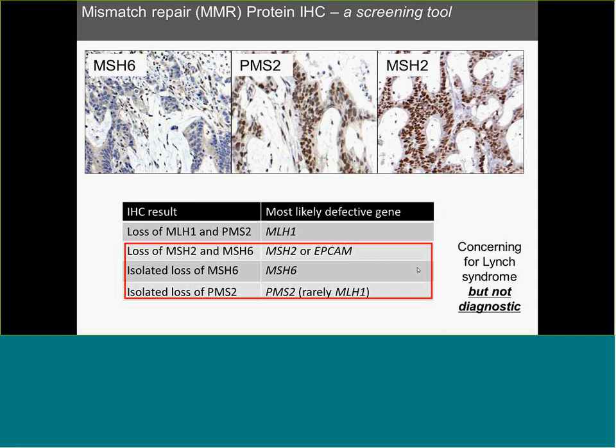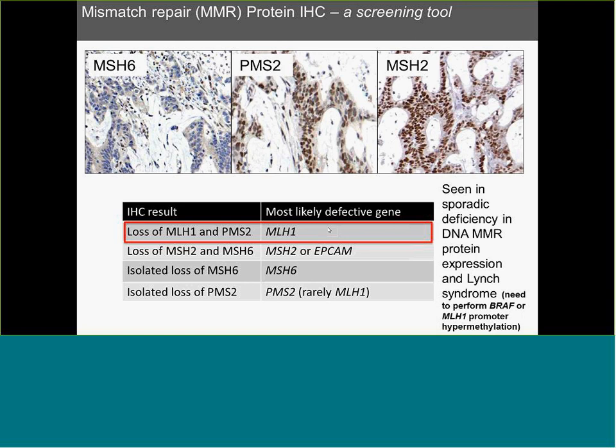Interpreting IHC results: loss of MSH2 and MSH6, isolated loss of MSH6, or isolated loss of PMS2 indicates likely Lynch syndrome gene defects — confirmed but not yet diagnostic. Loss of MLH1 and PMS2 with most likely defective gene being MLH1 is more problematic, as this can be seen in both sporadic DNA MMR protein deficiency and Lynch syndrome. You need to perform BRAF mutation testing or MLH1 promoter hypermethylation to determine whether this loss indicates sporadic deficiency or a germline mutation indicative of Lynch syndrome.